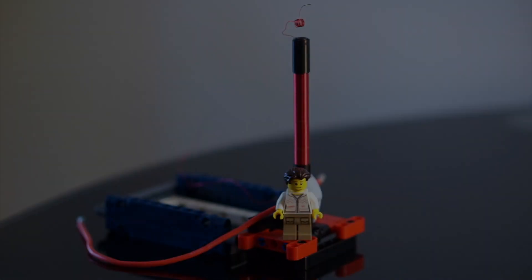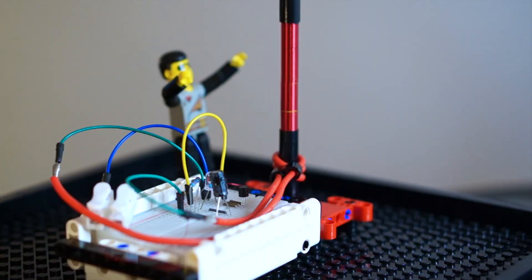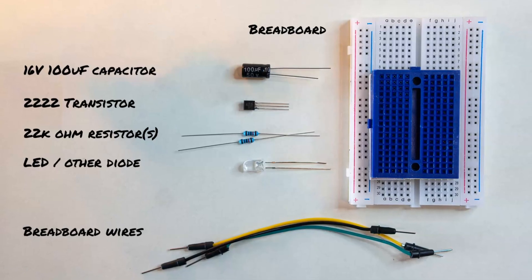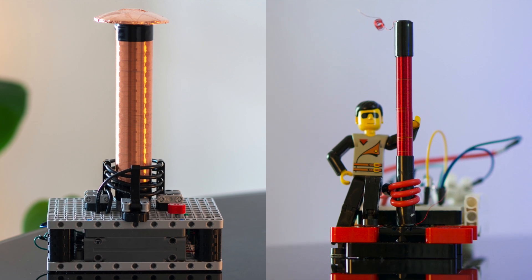What you're looking at here is a teeny tiny Lego Tesla coil of sorts. It's called a Slayer exciter circuit and it's a very forgiving self-oscillating circuit that's known to scale down very well.